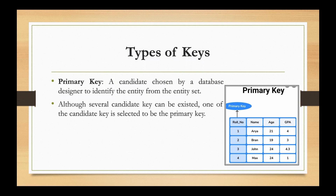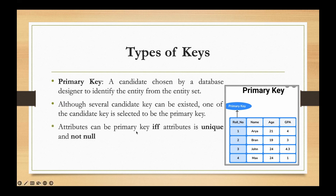A candidate key attribute can be a primary key if and only if the attribute is unique and not null. The two requirements for a primary key are: uniqueness — it must uniquely identify all records in the database table — and it must not contain null values.